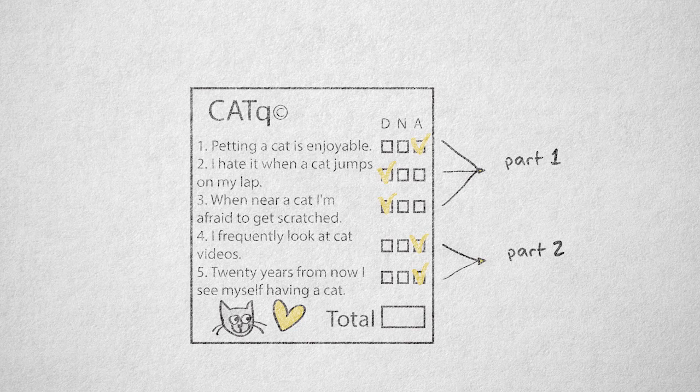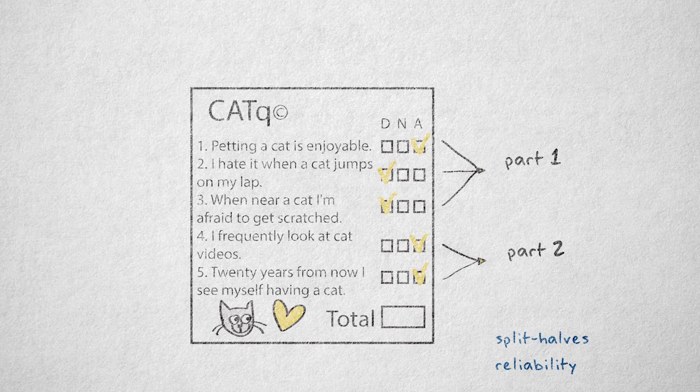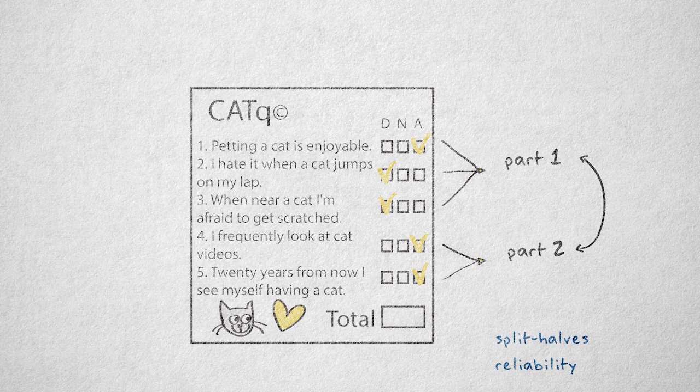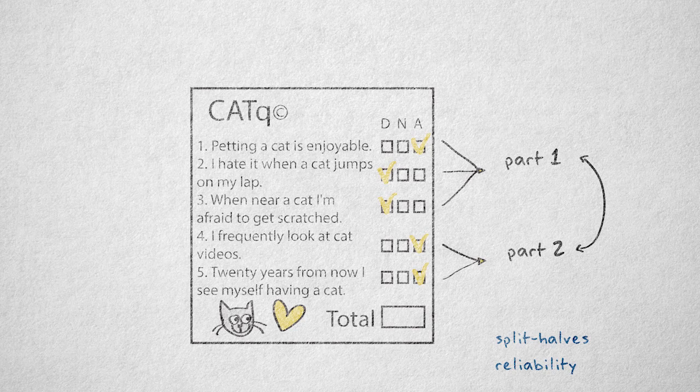If this is the case, then you can determine the split halves reliability by randomly splitting the test in half and assessing the association between the first and second half. There are also statistics that are equivalent to the average of all possible ways to split the test.